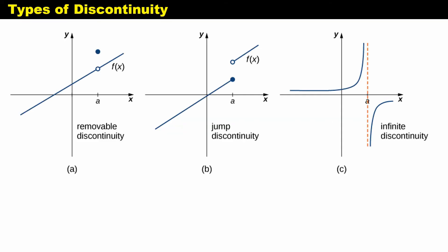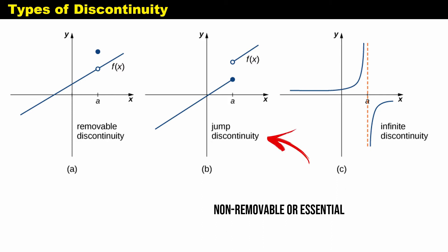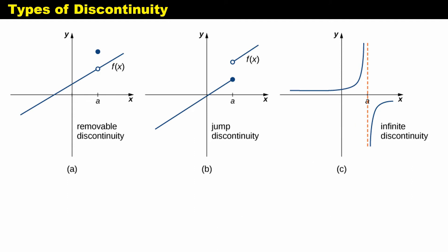Basically, there are two categories of discontinuity. We have the removable discontinuity and the non-removable discontinuity, or the essential discontinuity. Under non-removable discontinuity, we have the jump discontinuity and the infinite discontinuity.